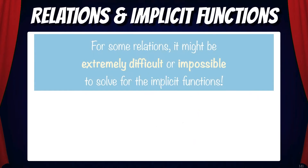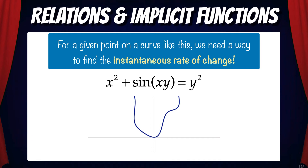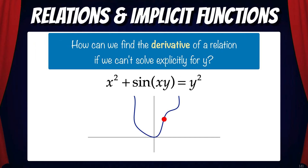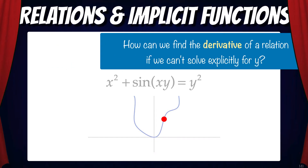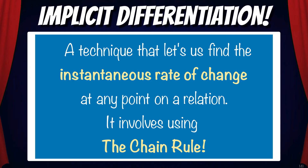But here's the thing — for some relations, it might be extremely difficult or impossible to solve for the implicit functions. I've shown some examples below. How can we solve for y? Even if we don't solve for y, these curves can still be graphed. And this means for a given point on a curve like this, we need a way to find the instantaneous rate of change at that point. But how can we find the derivative of a relation if we can't solve explicitly for y? The answer is by using a technique called implicit differentiation.